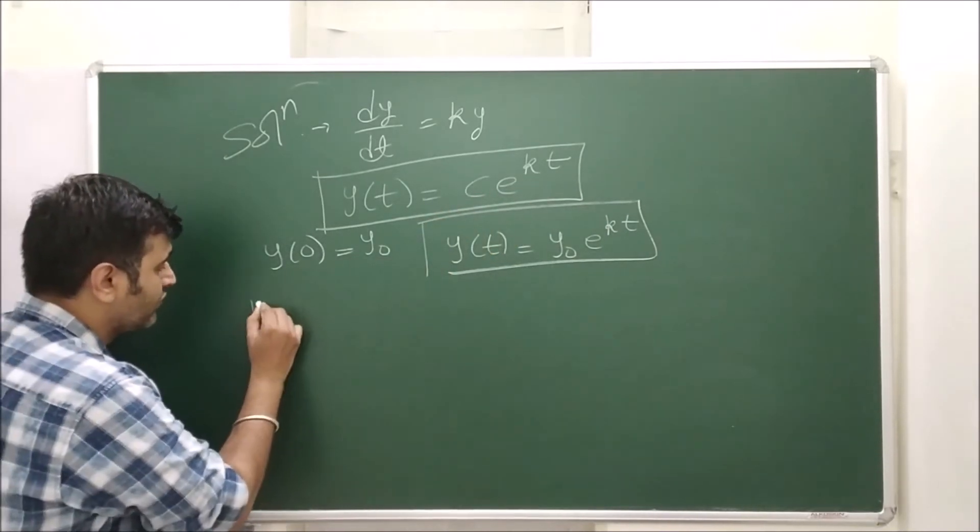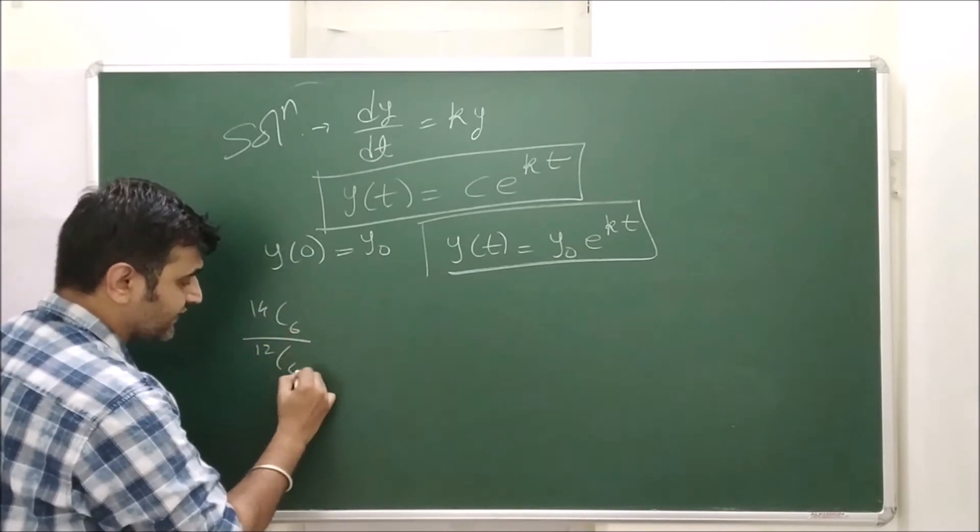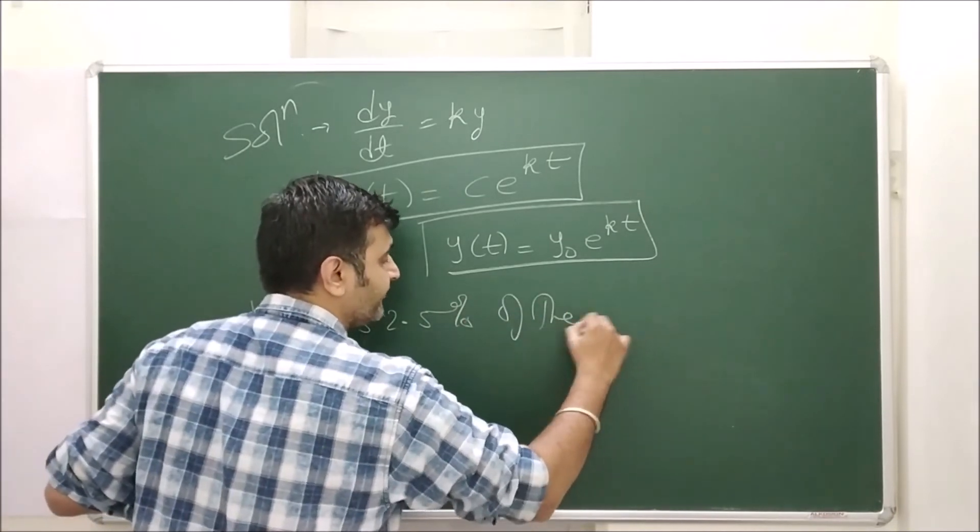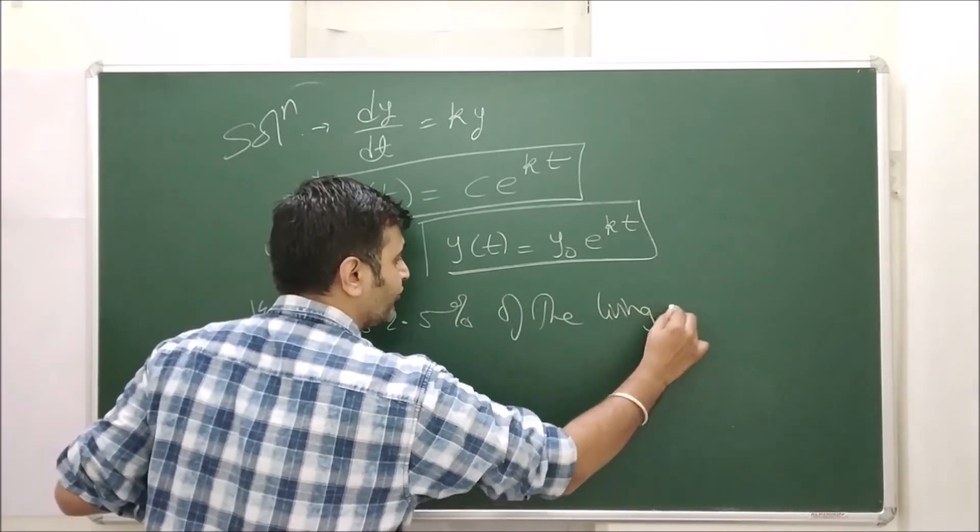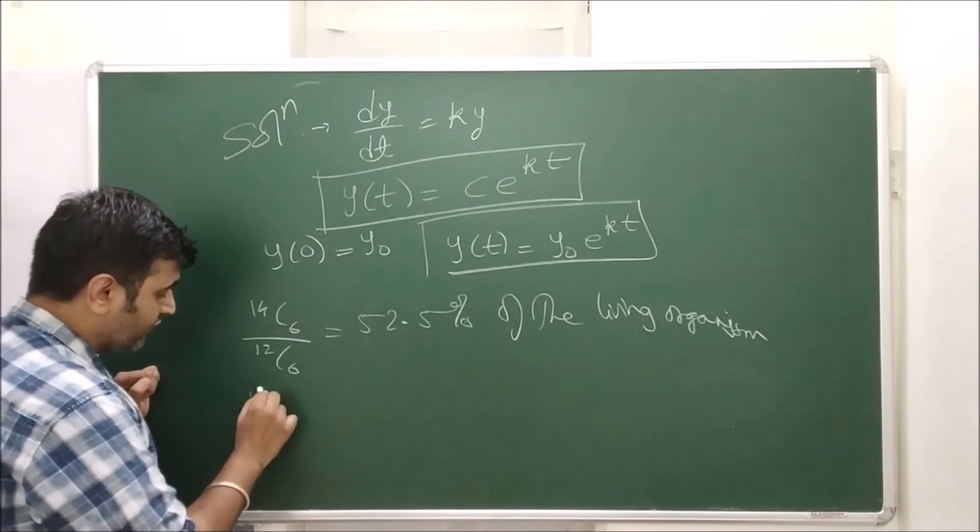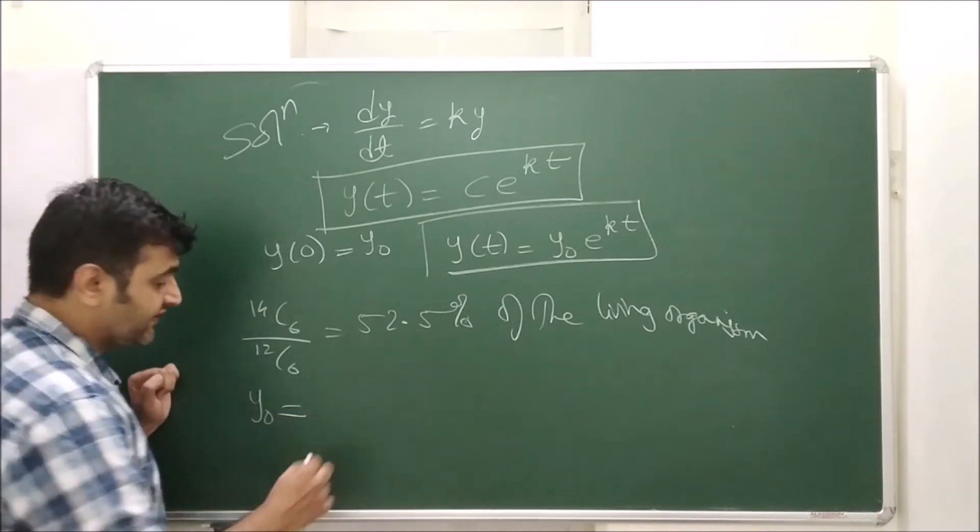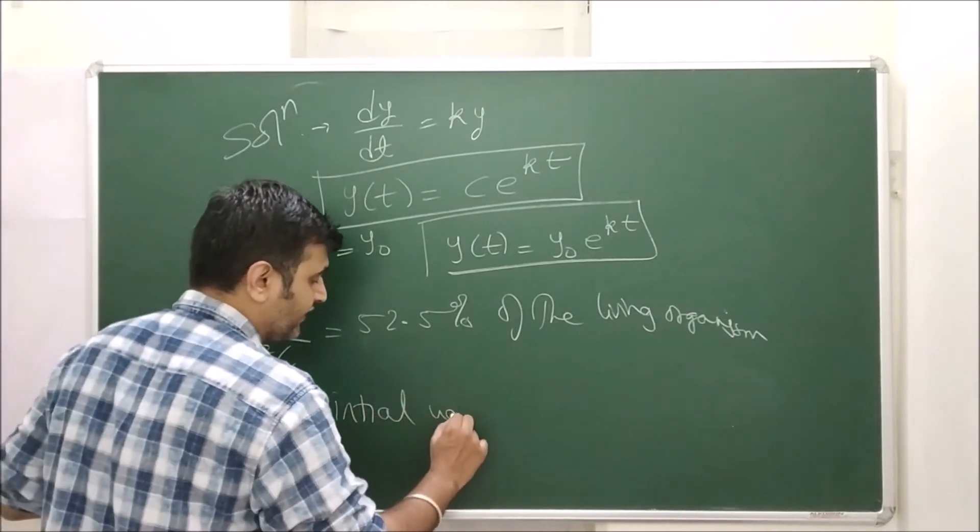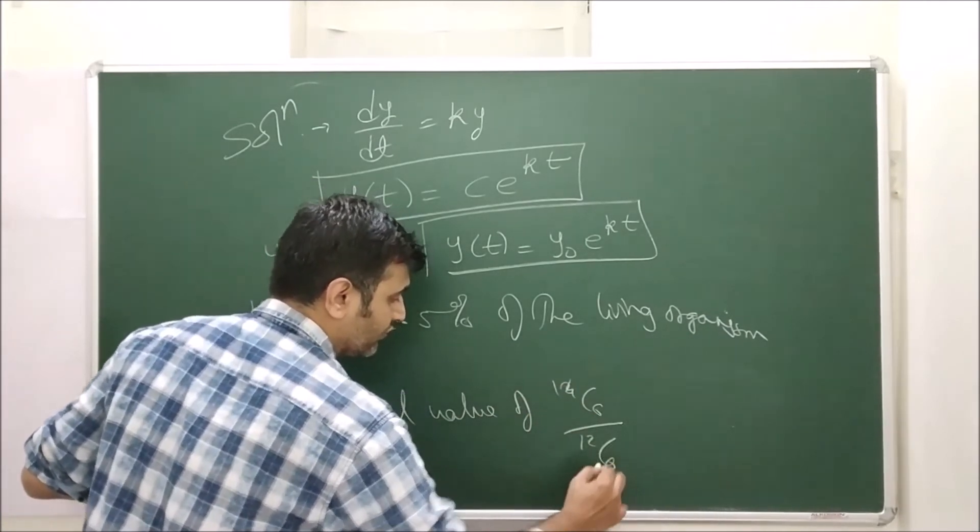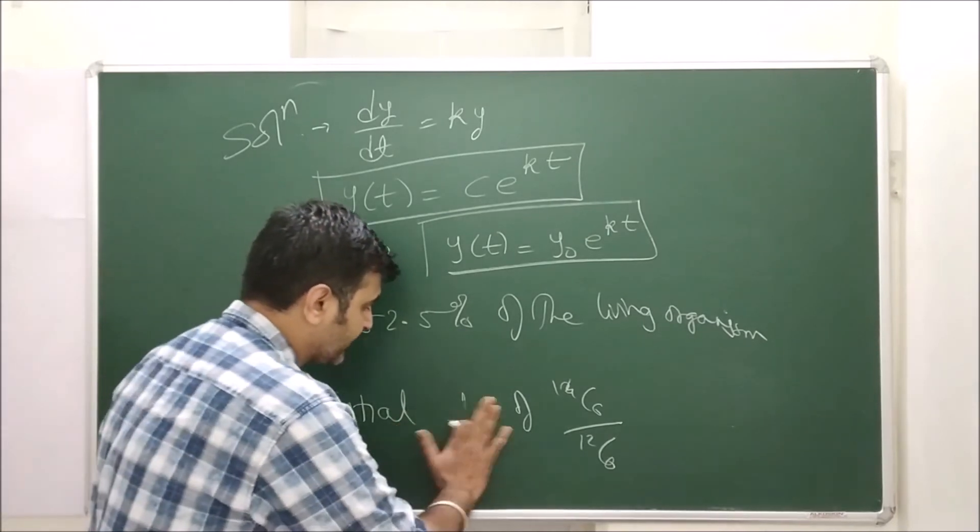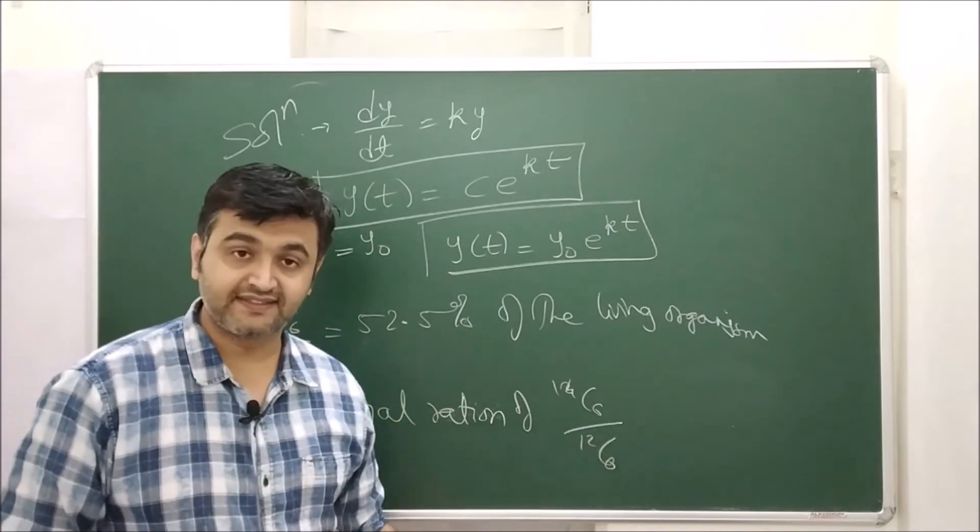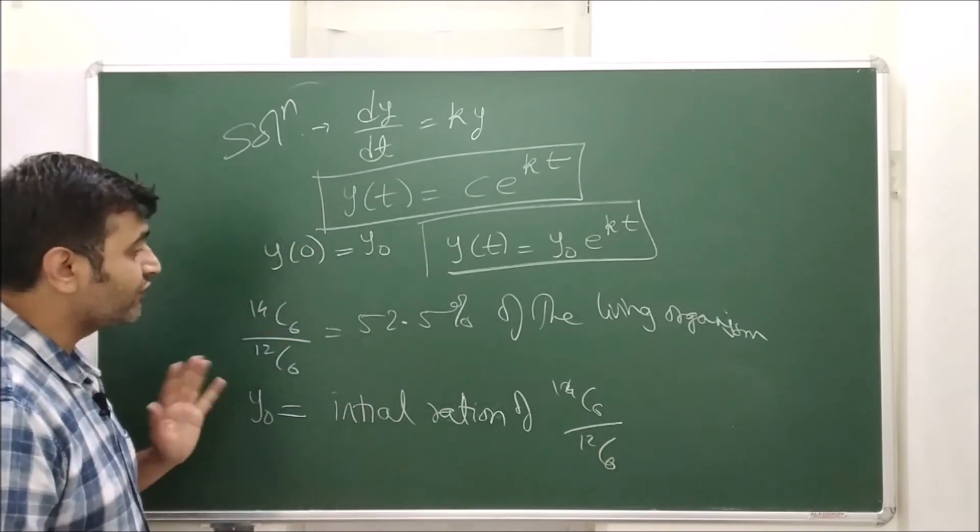What is given to you? 14C6 to 12C6 is 52.5% of the living organism. And also what is your y0? It is the initial value of this ratio, 14C6 to 12C6.